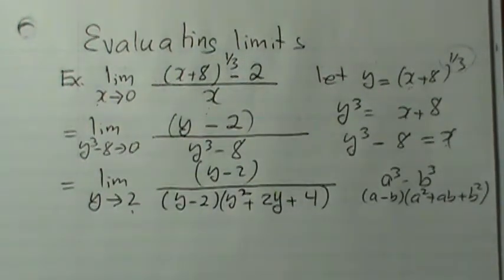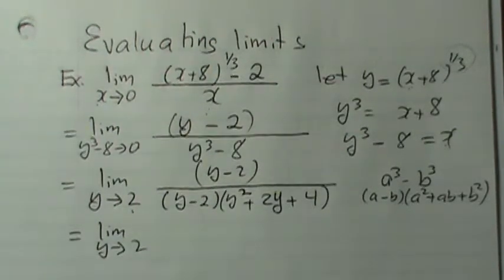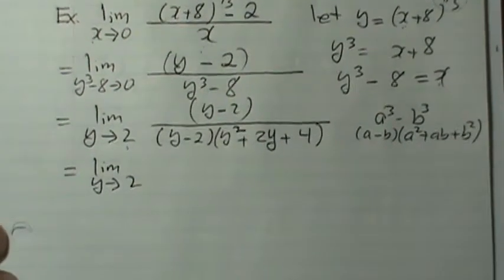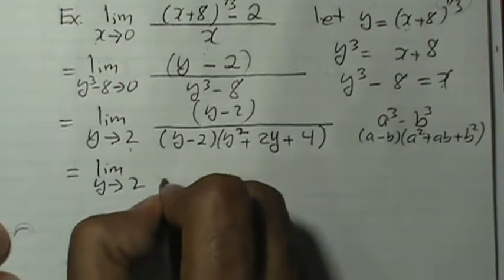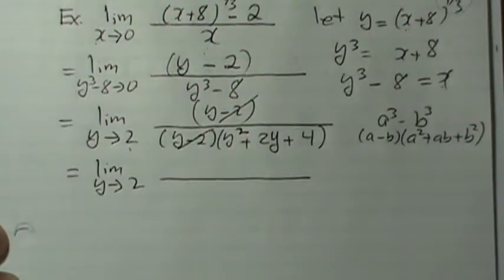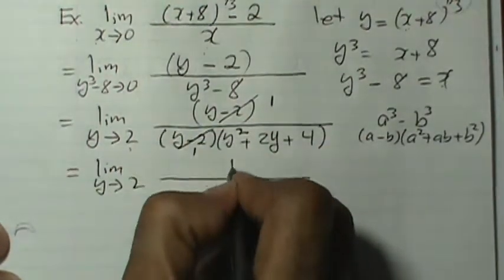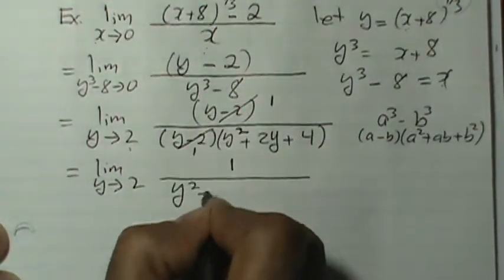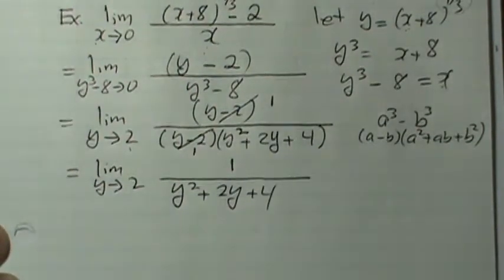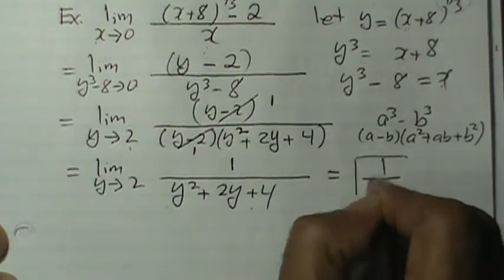Now we should be able to simplify. We rewrite as limit of y approaches 2. Once we simplify, we cancel y minus 2 from the top and bottom — it goes once. So we have 1 over y squared plus 2y plus 4. Now we substitute y equals 2 in the bottom and we get 1 over 12.